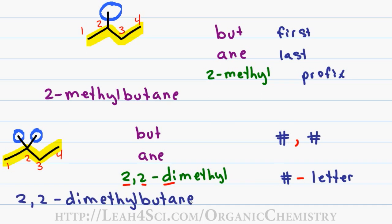Putting the name together, I have 2,2-dimethylbutane and notice there is no space between the substituents and the parent chain but rather it's all one word.